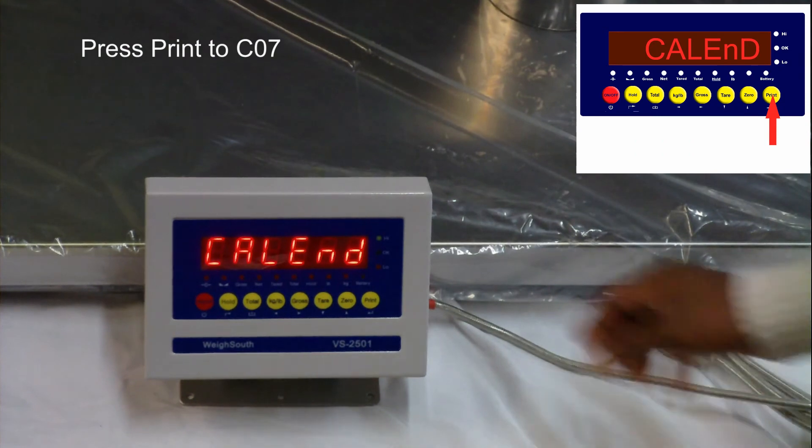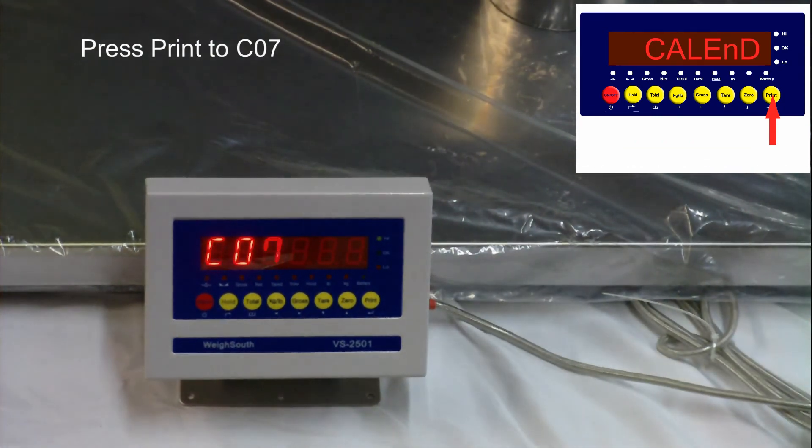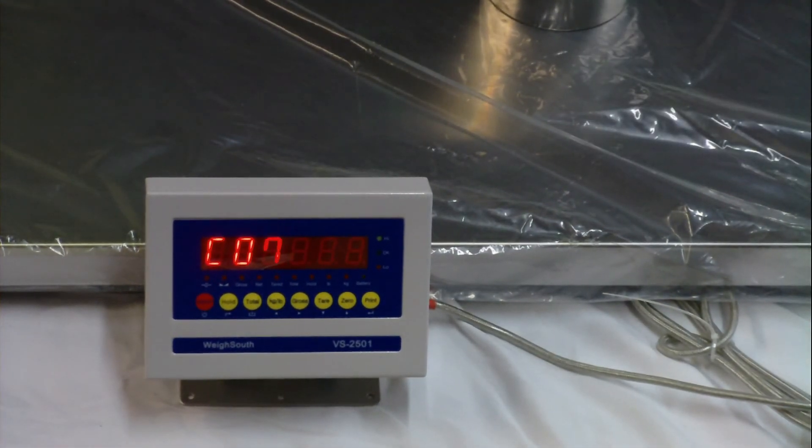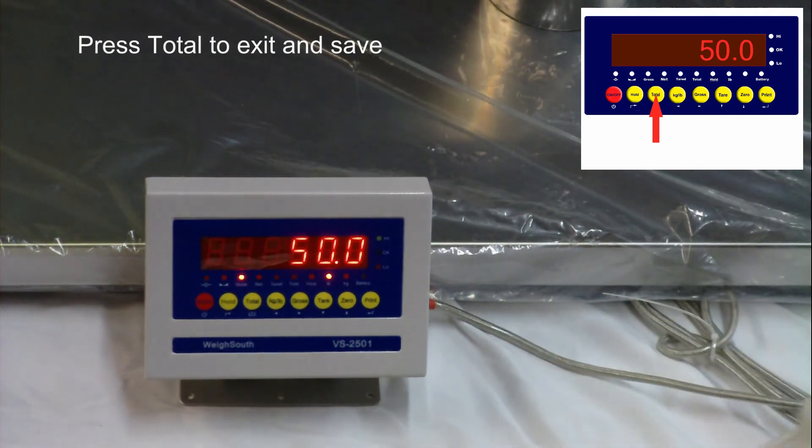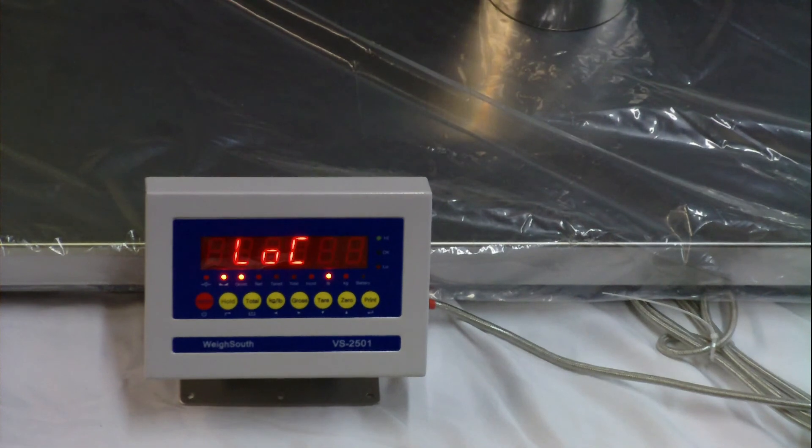Press the print key to move to the next function C07. At this time, calibration is complete and you can exit and save your settings by pressing the total key. The VS2501 returns to normal weighing and calibration is complete.